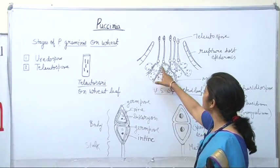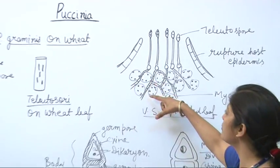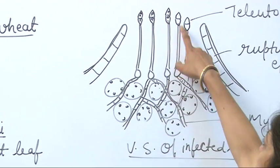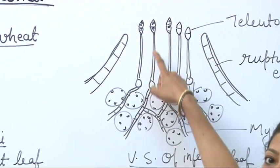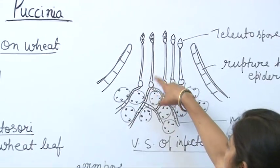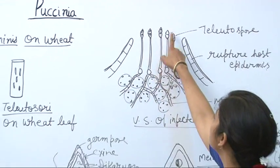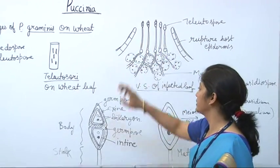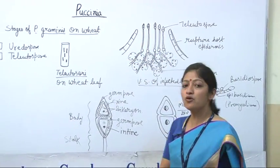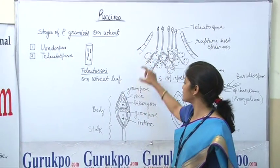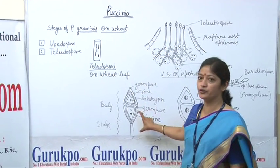These are the basidia of teliospores, and these are the erect teliospores on teliosori, on which teliospores are formed. Now we will see the single structure of teliospores.